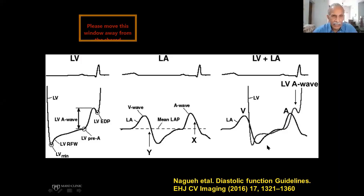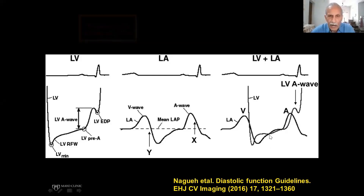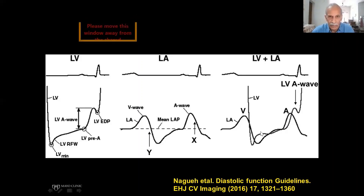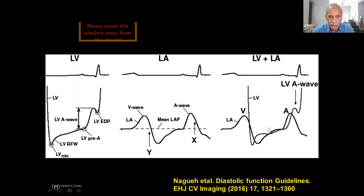If the heart rate increases, this diastasis period will decrease. During early diastole, 70% of the blood comes in. In younger people — 35, 40, 45 — they are able to exercise and heart rate can go up to 100-110. Nothing will happen because most of the volume still comes in. Whereas in older people, if the heart rate increases, this relaxation phase is already limited. This phase comes down, atrial contraction increases, LV pressure goes up, and we feel short of breath.